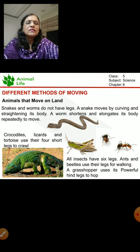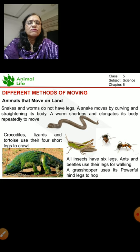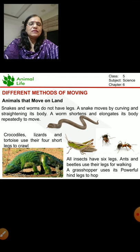The worm also moves the same way. It shortens and then elongates - shorten, elongate - so that it can move. This is how they make movement on the land.